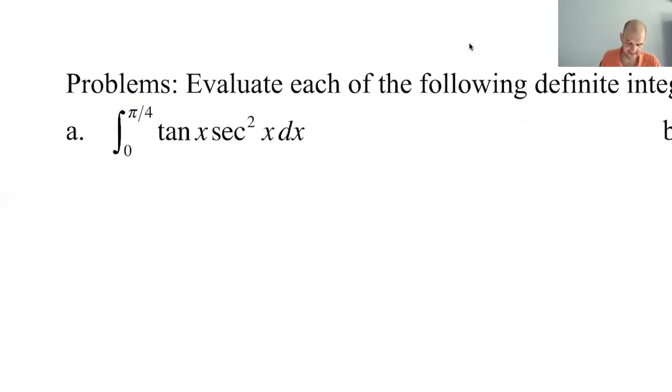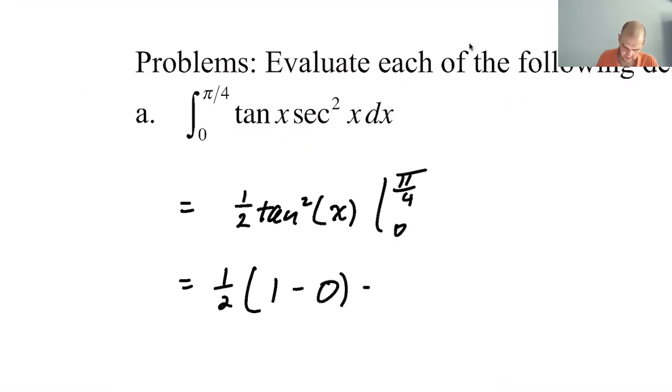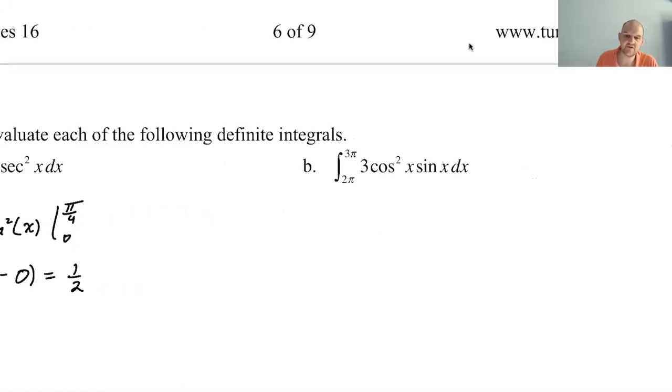I'm going to do them in the way that I think is probably fastest. So here I'm thinking if u is tangent and du is secant squared. The derivative of tangent is secant squared, so this is perfect. So then that's going to be one half tangent squared of x, and we're going to go from 0 to pi over 4. One half, the tangent of pi over 4 is 1, squared is 1, tangent of 0 is 0, so one half.